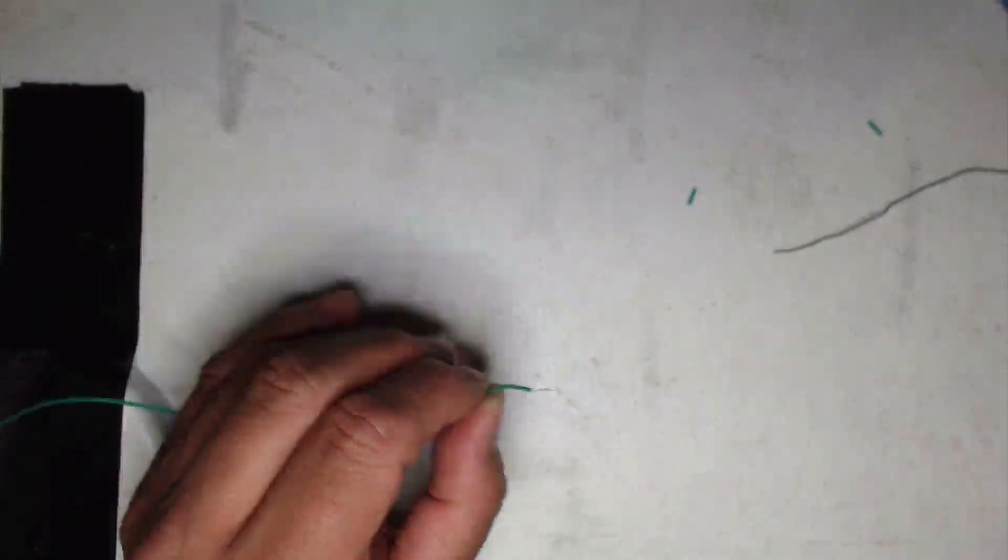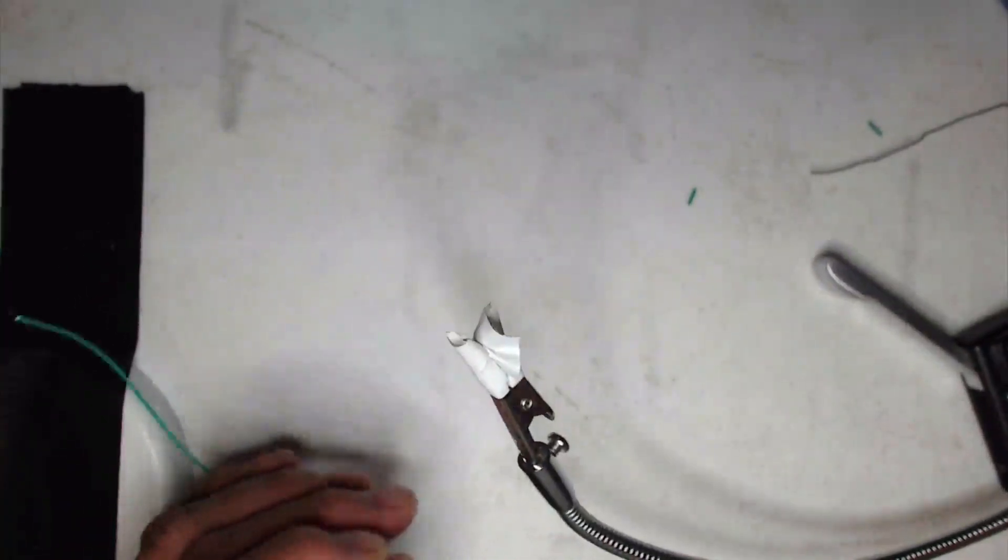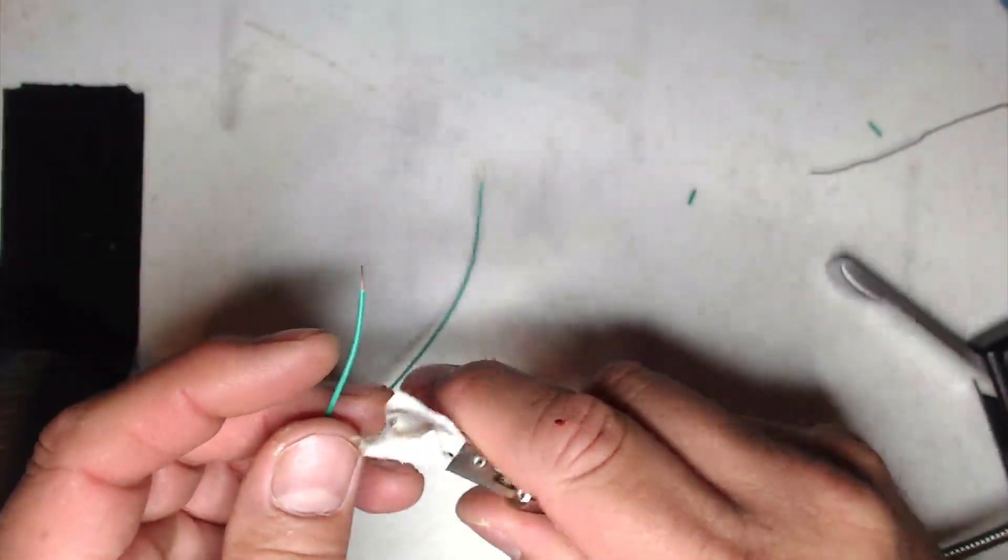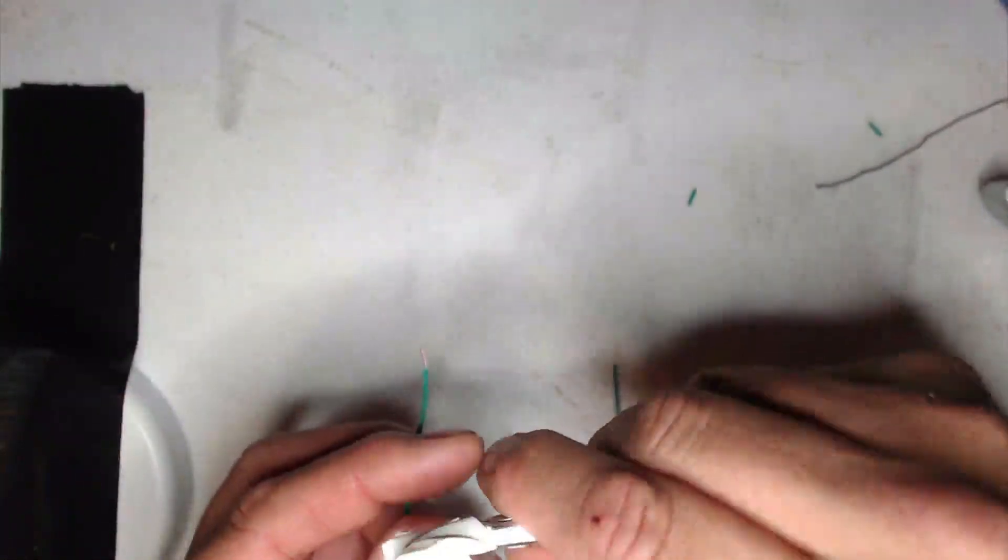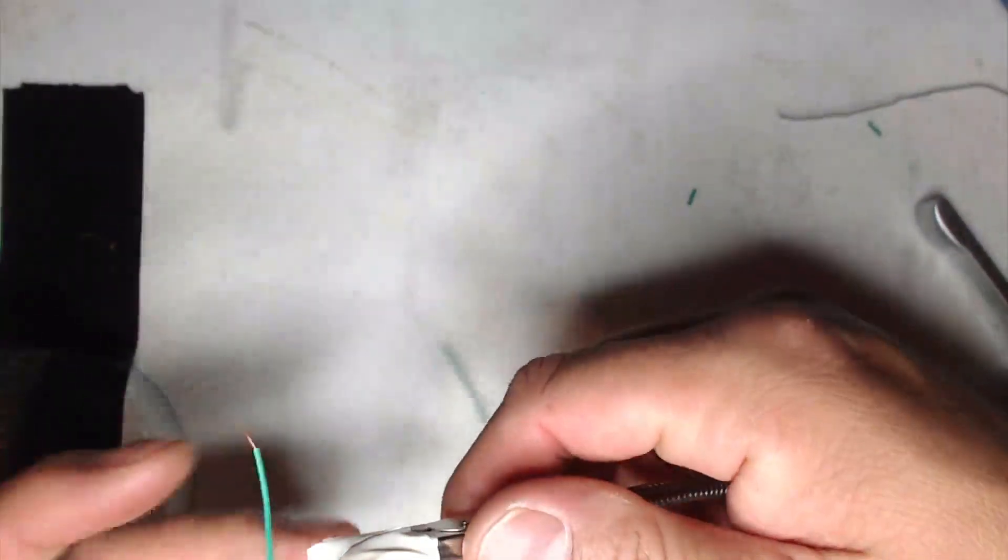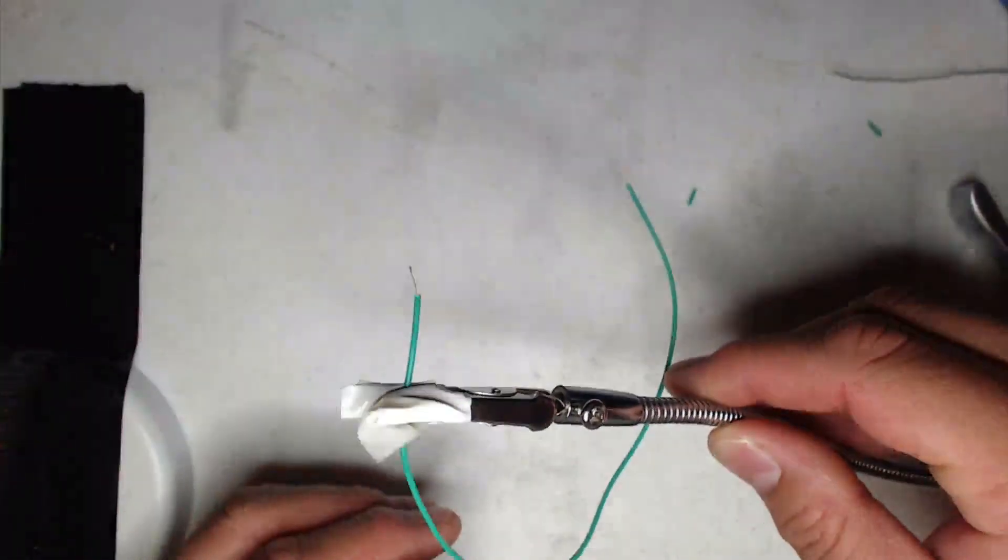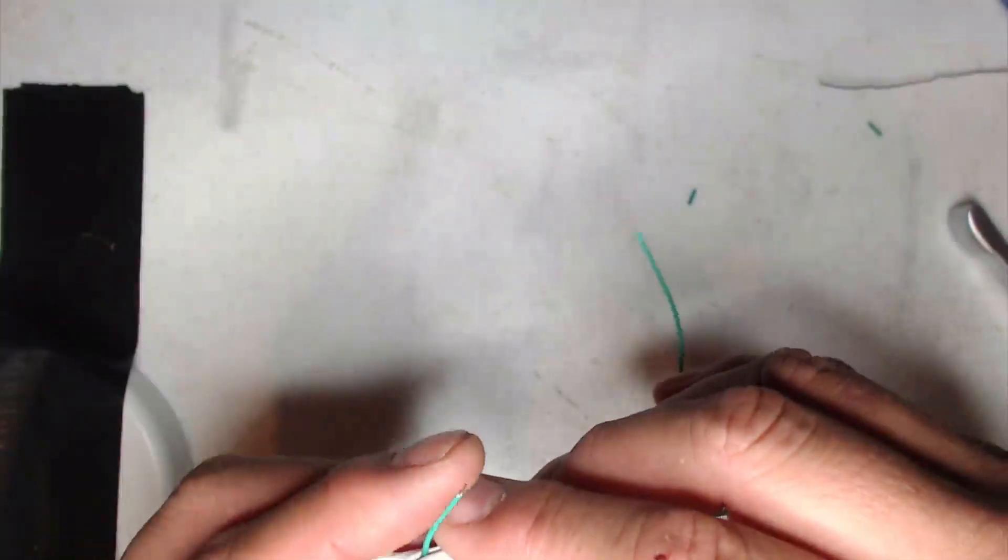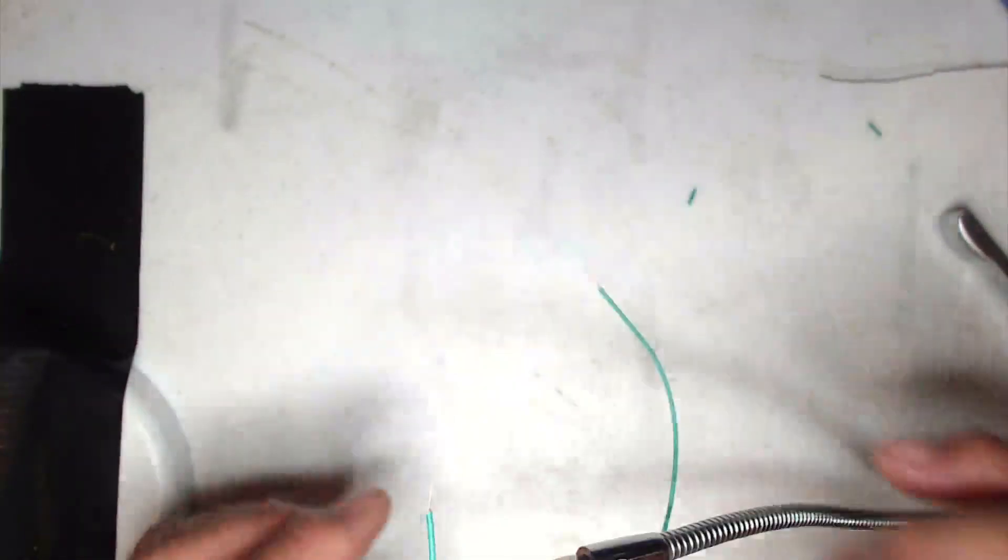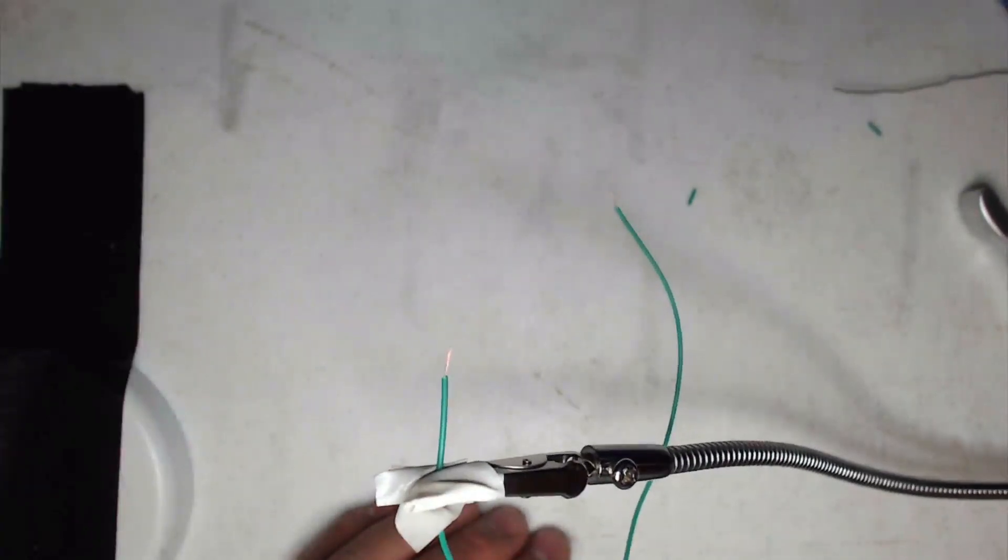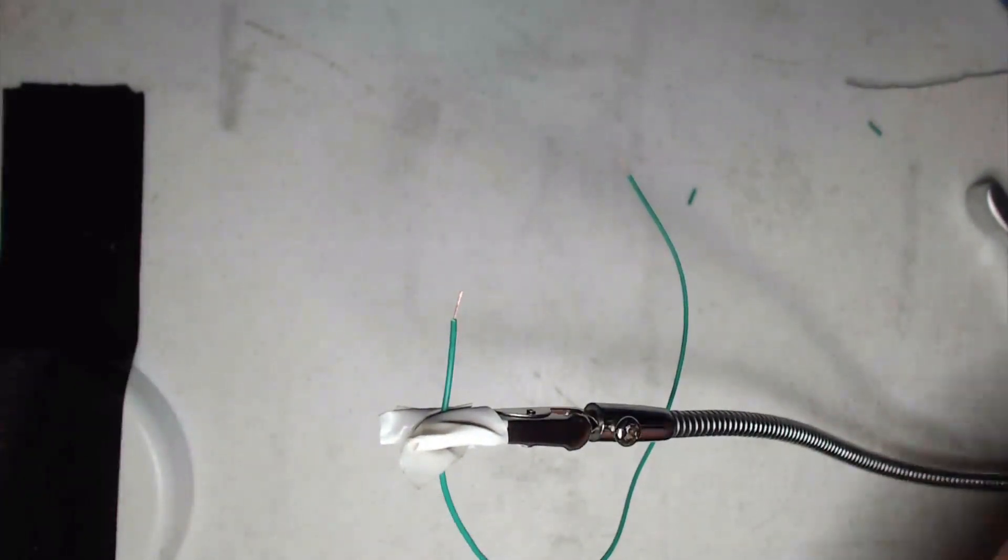I'm going to bring in here my third hand helper, and then just place one of the wires forward like that. So I can nicely tin the wire, in other words, coat it with some solder.